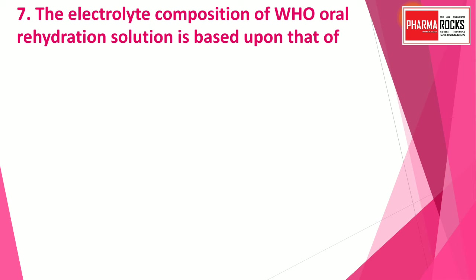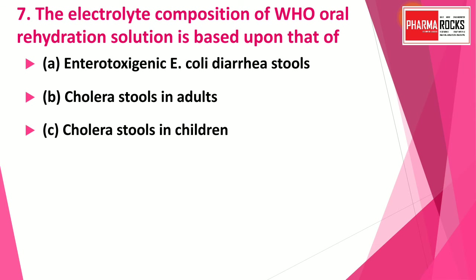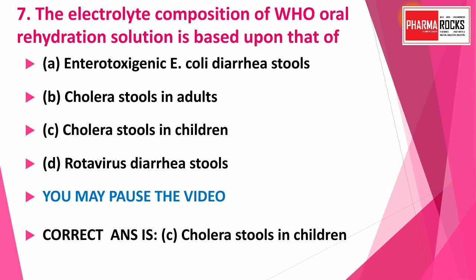Question number seven: The electrolyte composition of WHO oral rehydration solution is based upon that of — option A: enterotoxogenic E. coli diarrhea stools; option B: cholera stools in adults; option C: cholera stools in children; option D: rotavirus diarrhea stools. The correct answer is option C — cholera stools in children.